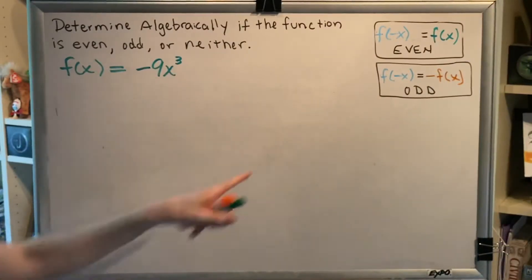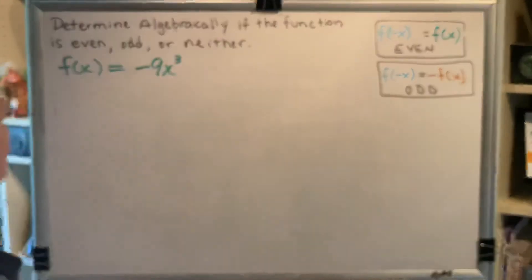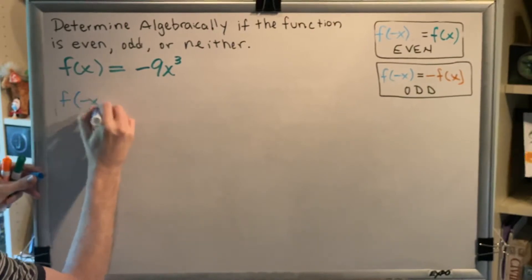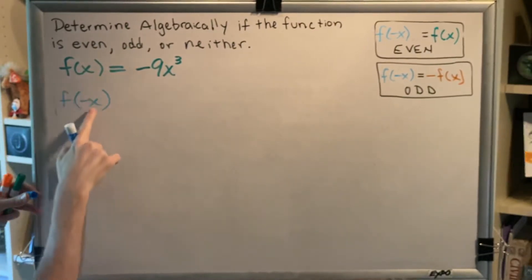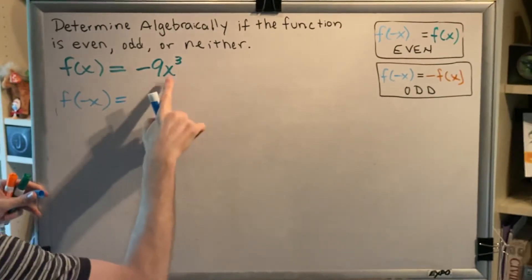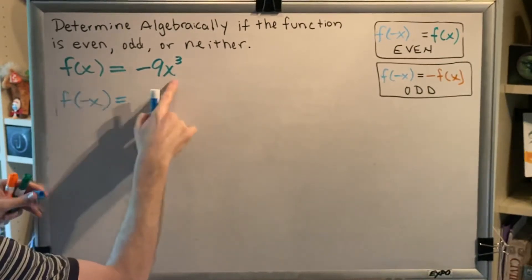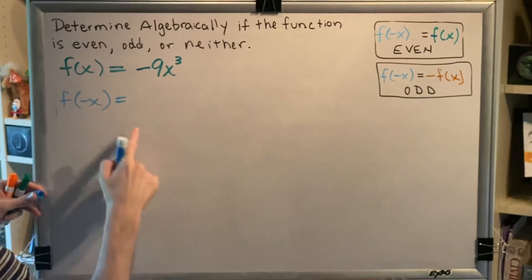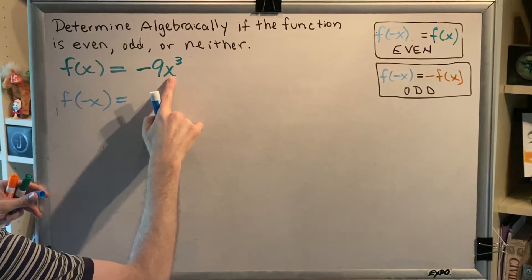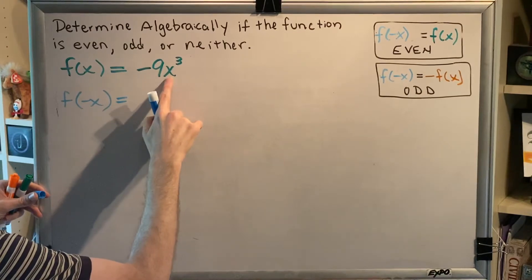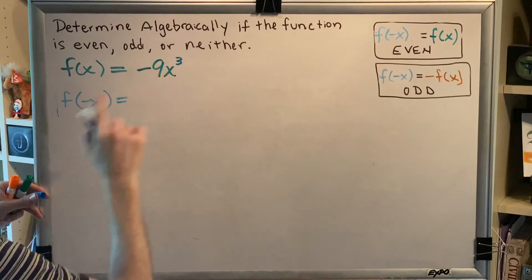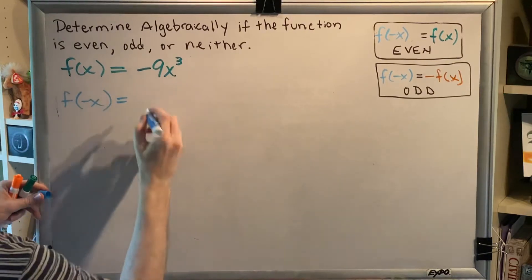The first thing that you need to do is determine what is f of negative x. And the way we do that is by making a replacement. Notice that where x used to be, now there is a negative x. So that means wherever there is an x in our entire function statement, we're going to put negative x instead. And whenever you replace something with something new in algebra, if the thing you're replacing has an exponent, or a multiplier, or is being subtracted, then parentheses are needed.